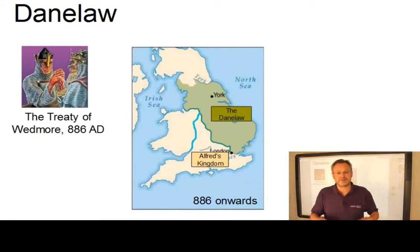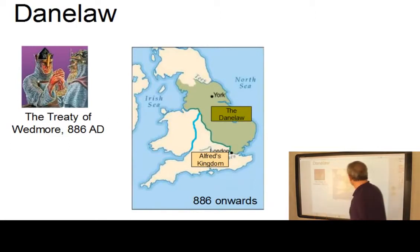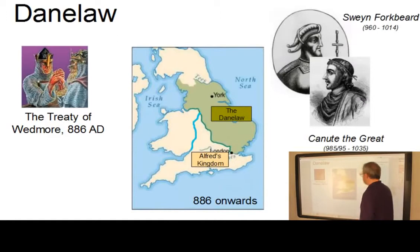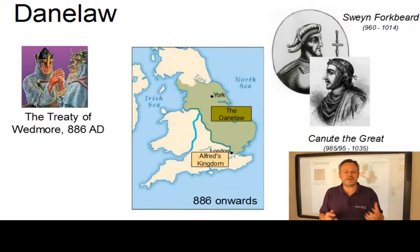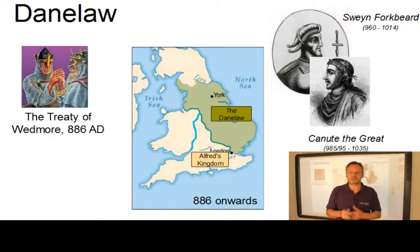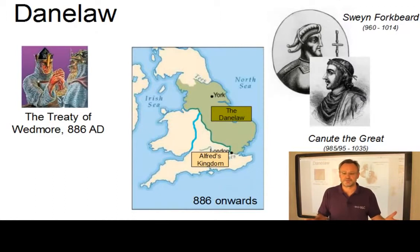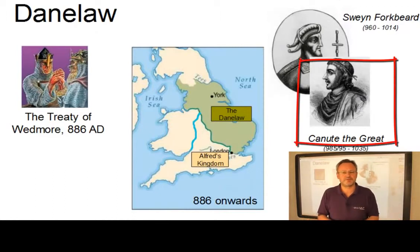In 897, the Danes had ceased to invade. But between 1003 and 1013, Swain of Denmark and Norway invaded England several times. In 1013, the English finally accepted him as king, followed by his son Canute, later referred to as Canute the Great.